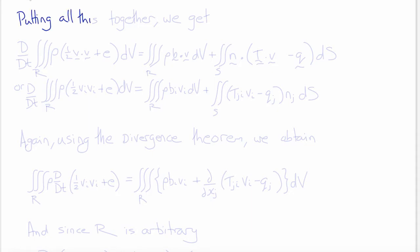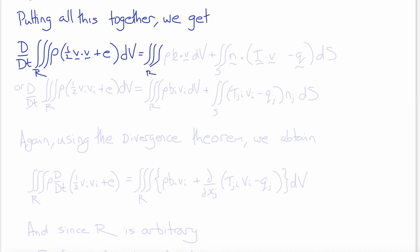Putting all of these terms together, our statement of conservation of energy becomes: the material derivative of the volume integral over R of rho times (one-half V dot V plus E) integrated with respect to volume, equals the volume integral over R of rho times B dot V, plus the surface integral of N dotted with T dot V minus Q.